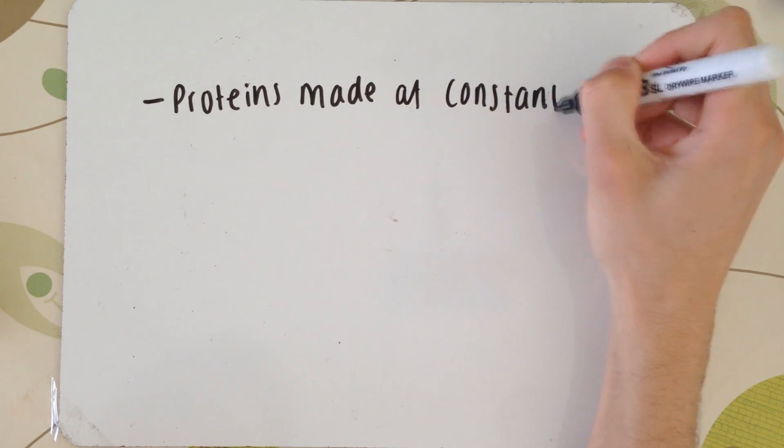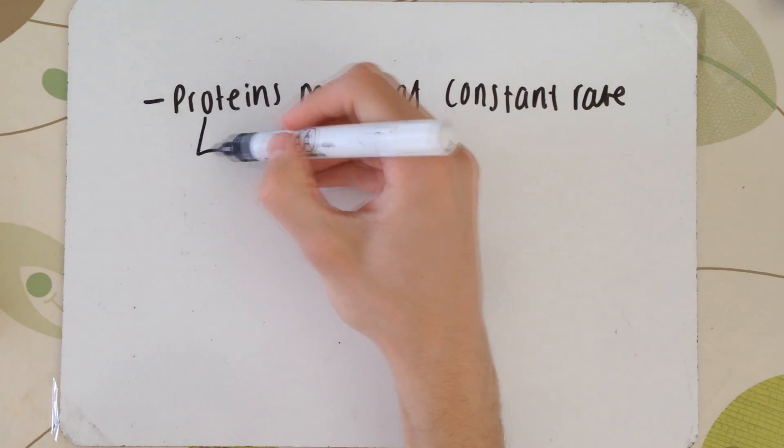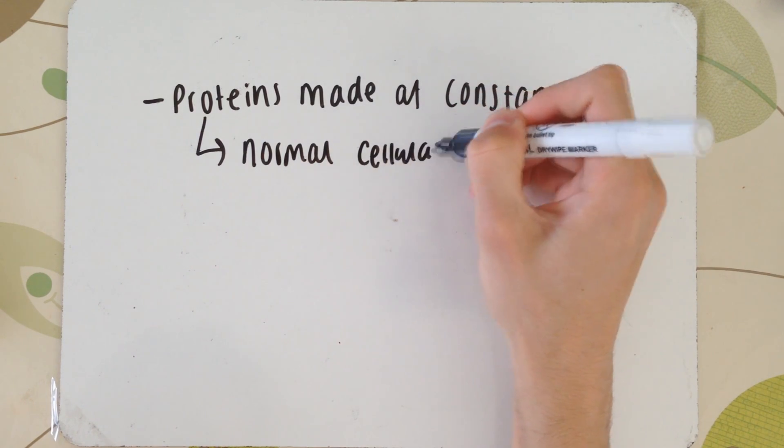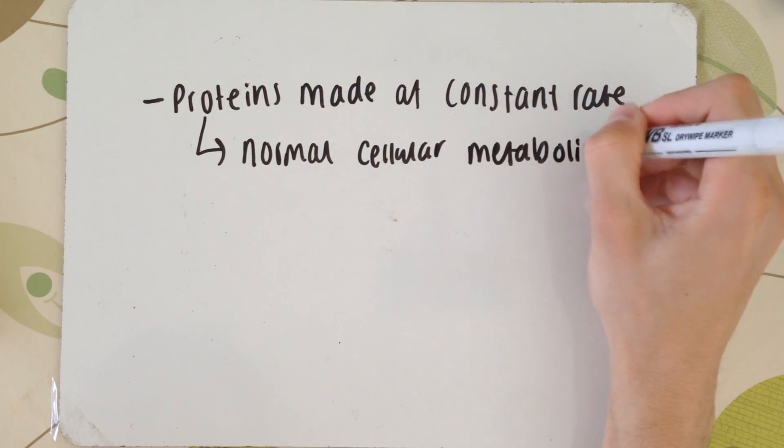Obviously, in the cell, proteins are made at a constant rate in normal cellular metabolism. So, this is obviously all the normal proteins that this cell is going to make.